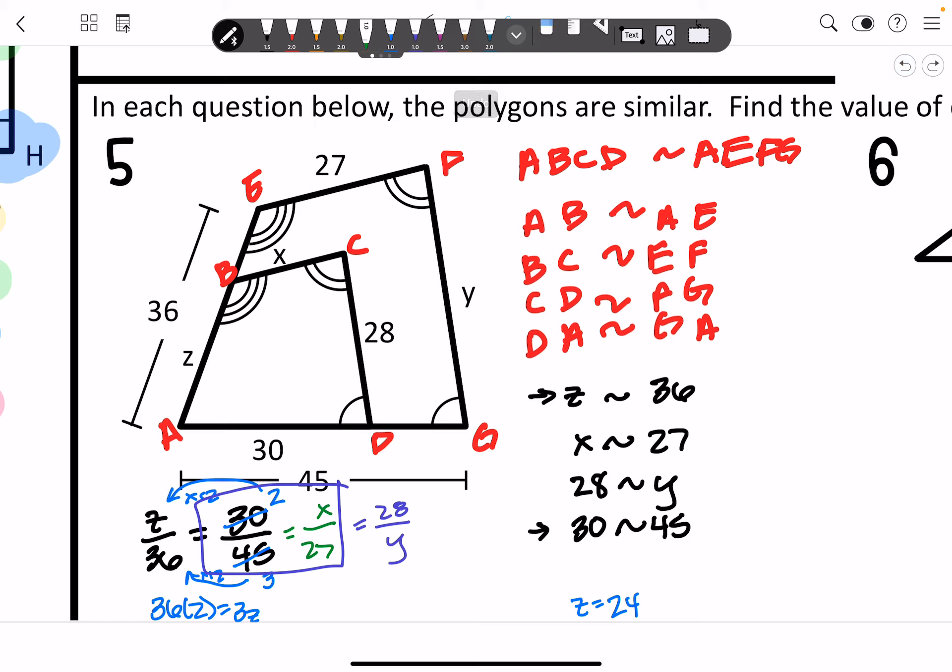Alright. So for X, you guys should have gotten 18. And for Y, you should have gotten 42. Alright. And that would be your final answer.